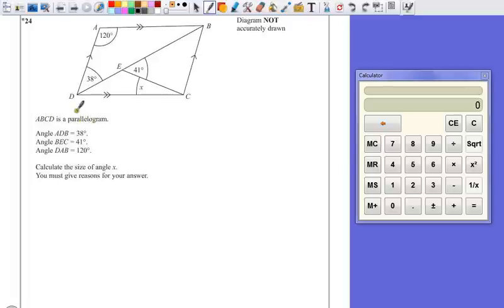Now what we've got here is a parallelogram, so we know opposite sides are the same length, we know that opposite angles are the same, and that's going to help us out a little bit. We know that angle ADB, that's the angle formed between AD and B here, is 38 degrees. We know that BEC, B to E to C, is 41 degrees, and DAB is 120.